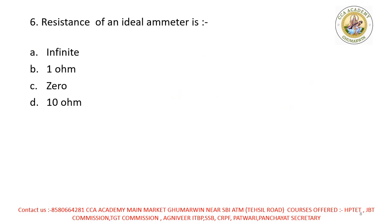Next question mein bola gaya hai: resistance of an ideal ammeter? Ammeter jo hai current ko measure karta hai, current easily flow karta hai — toh yahan pe jo resistance rahegi woh option C, approximately 0 ke equal rahegi, tabhi woh current ko easily measure kar payega.